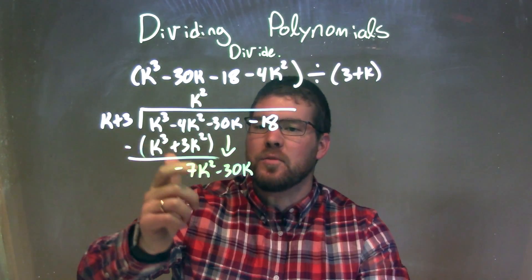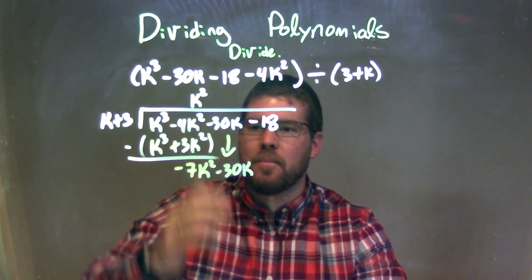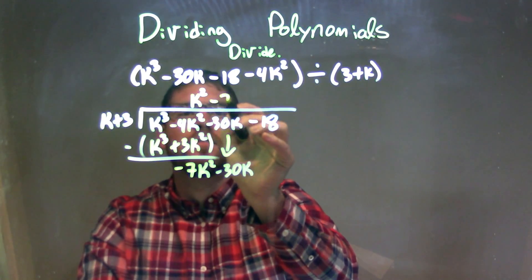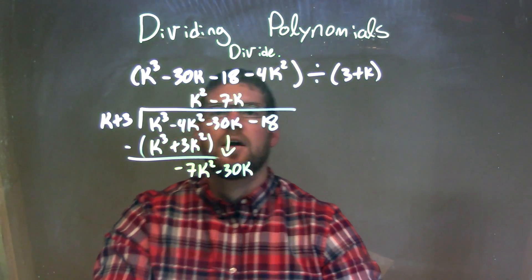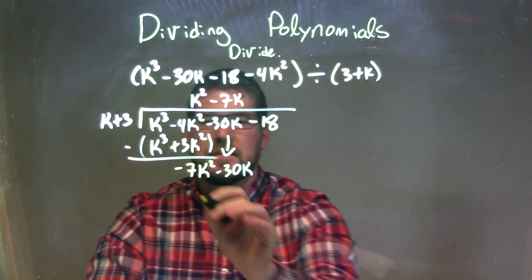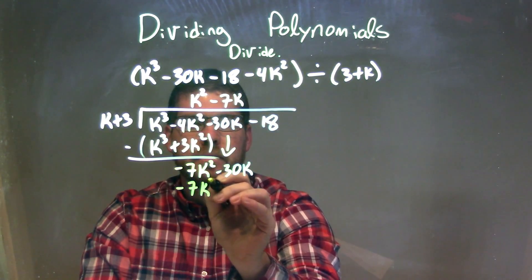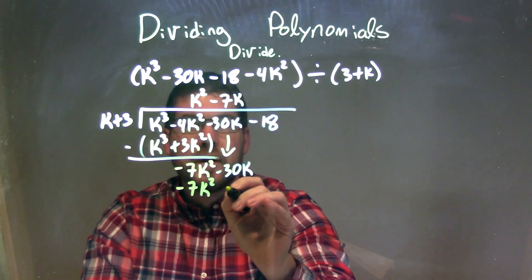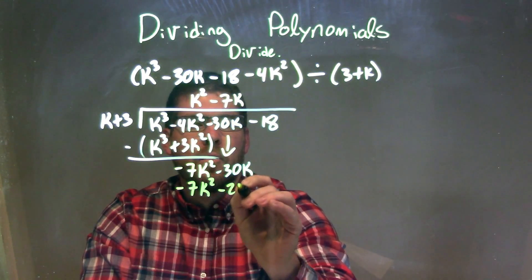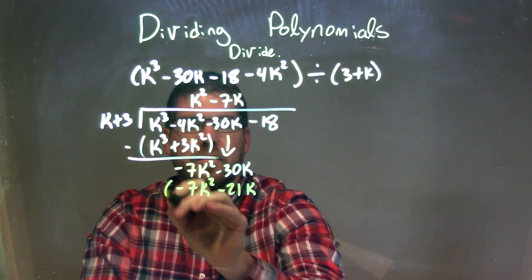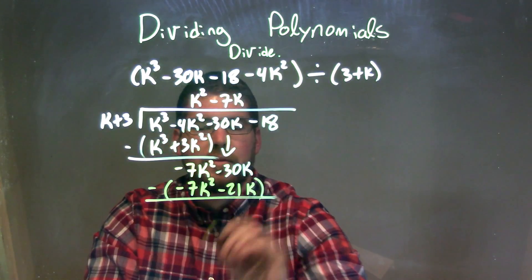What times k gives me a minus 7k squared? And that's a minus 7k. So minus 7k right there. Minus 7k times k is a minus 7k squared. Minus 7k times 3 is a minus 21k. We subtract the two with our parentheses.